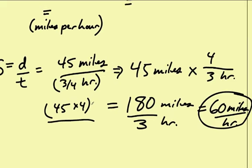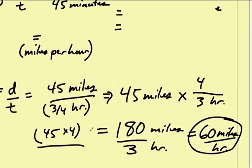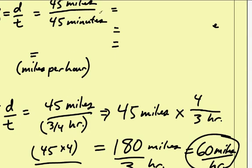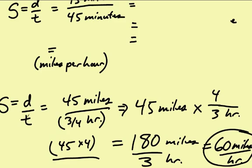So to review, all we did to figure this out was change 45 minutes into fractions of an hour, and that turned out to be 3 quarters of an hour - that's what 45 minutes is. So the one crucial thing is we plug in our distance over time, and we take the reciprocal of 3 fourths of an hour. Instead of dividing by 3 fourths, we're multiplying by 4 thirds. We do our math, and 180 divided by 3 turns out to be 60 miles per hour.